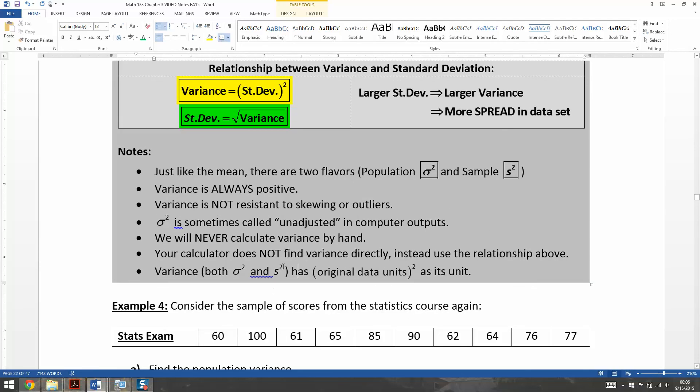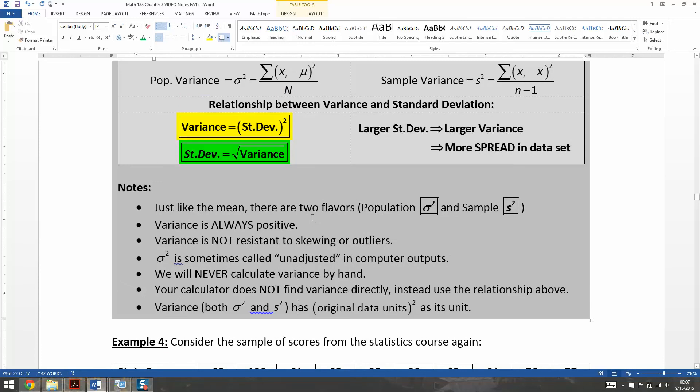Now, keep in mind that the variance, either variance we're talking about, its units are the original data set units squared, which, of course, doesn't actually make a lot of sense, but that's what it is. And that's why we don't use it for interpretation in chapter 3, for example, but we will start using it in chapters 9 and 10, where we don't care about the units so much, we care about some other stuff.